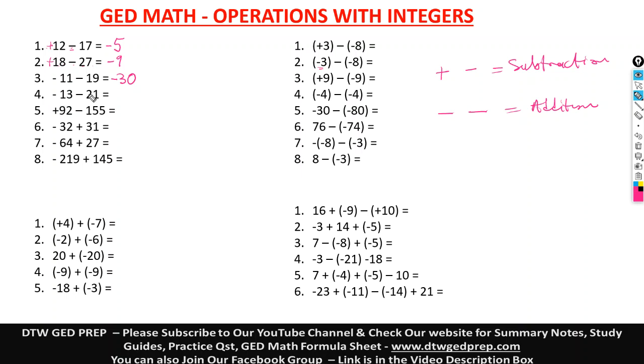We also have a negative and negative here — we add up. So we have 4 and 3, that's 34, and we put a negative because both numbers are negative.